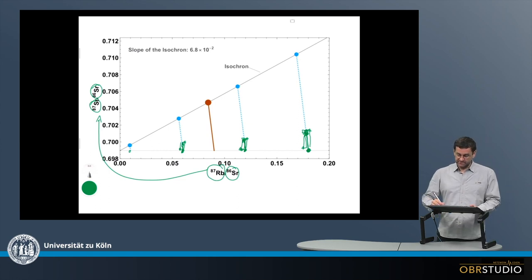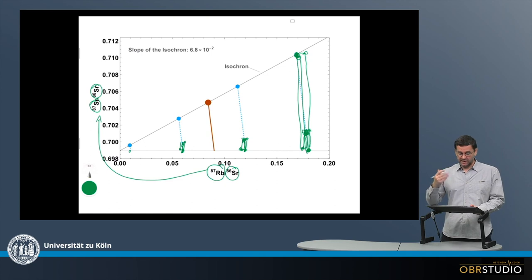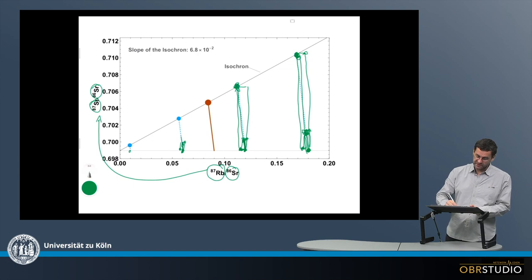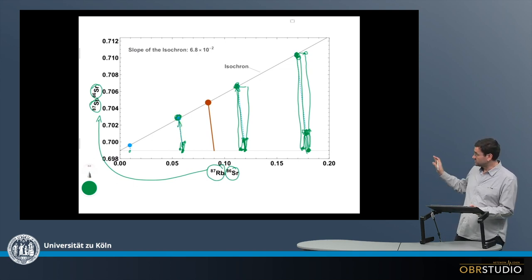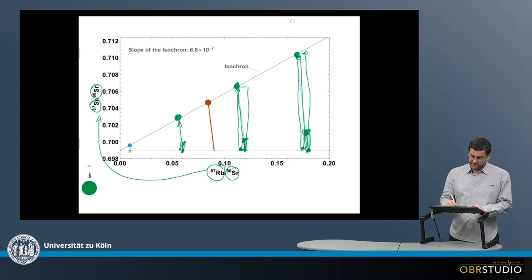Over a longer time period, a greater amount of strontium is produced and more rubidium has decayed, giving a larger overall change in composition for the first component. The second component moves less, and the third component even less, and so on for additional components. Importantly, after a certain elapsed time, all these new compositions plot on one single line.